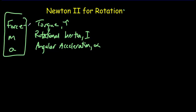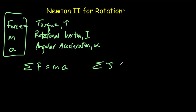For linear motion, we've got the relationship F = ma — the net force equals mass times acceleration. For rotational motion, we can write that the sum of the torques, or resultant torque, equals the rotational inertia times the angular acceleration: τ = Iα. This rotational inertia is a property of the body, and we need to determine values for it. The angular acceleration is the rate at which the angular velocity changes.